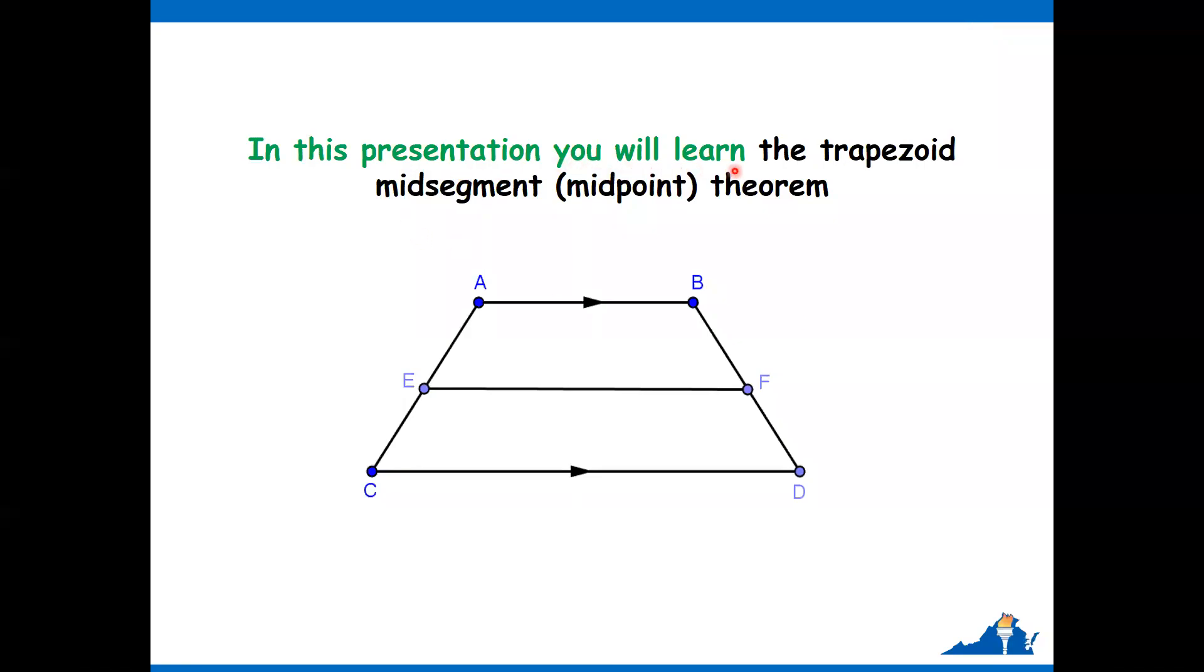In this presentation, you will learn the trapezoid midsegment or midpoint theorem. ABCD is the trapezoid. E is the midpoint of AC, F is the midpoint of BD. We need to notice that AB and CD are both referred to as the bases of the trapezoid, while AC and BD are referred to as the legs of the trapezoid.